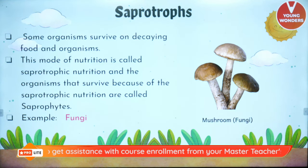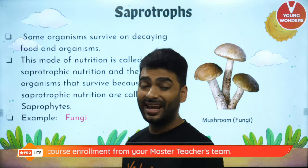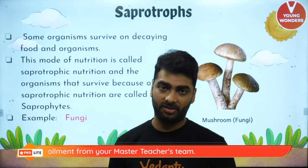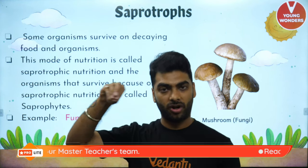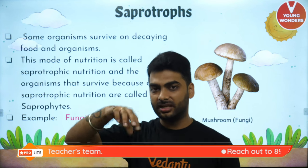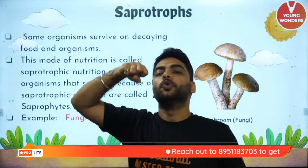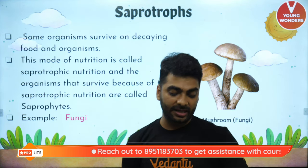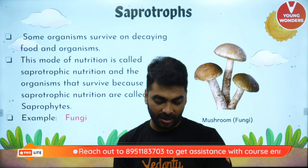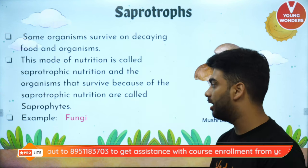Then we have saprotrophs. Saprotrophs basically feed on dead and decaying organic matter. They attach themselves to an organic matter, release certain enzymes, make it soluble and then absorb the nutrients. An example of a saprotroph is fungi, or mushrooms.